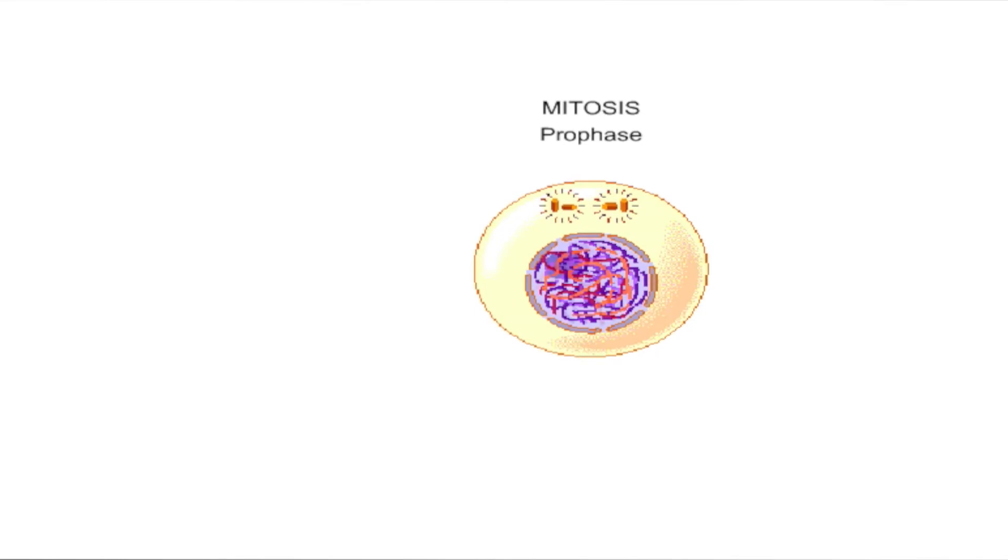The first stage of mitosis is prophase. As prophase begins, the chromosomes start to condense so that each duplicated chromosome becomes visible as a pair of sister chromatids joined by the duplicated but unseparated centromeres.